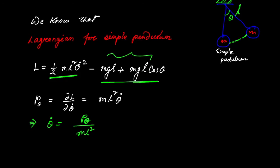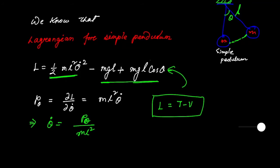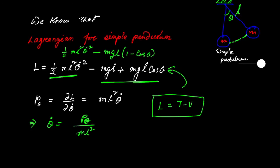We know L = T − V. Comparing with our equation, this can also be written as (1/2)ml²θ̇² − mgl(1 − cosθ). Here you can see this part represents the potential energy V, and this part represents the kinetic energy T. So we can write T = (1/2)ml²θ̇².